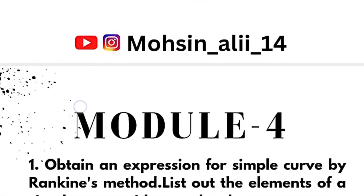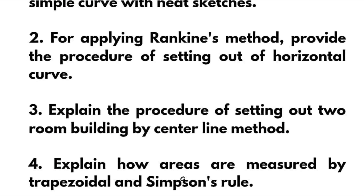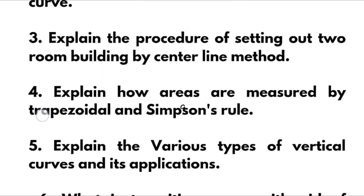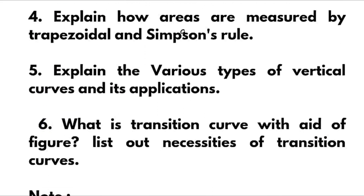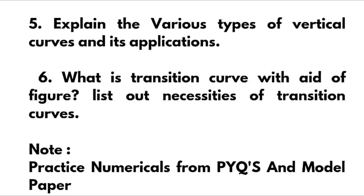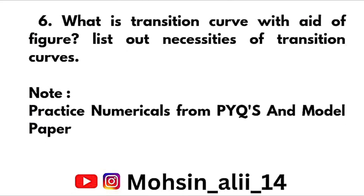Module 4 is also a combination of numerical and theoretical portions. Theoretical portions include: Obtain an expression for simple curve by Rankine's method. List out the elements of a simple curve with neat sketches. Provide the procedure of setting out of horizontal curve applying Rankine's method. Explain the procedure of setting out a two-room building by centre line method. Explain how areas are measured by trapezoidal and Simpson's rule. Explain the various types of vertical curves and their applications. What is a transition curve? List out the necessities of transition curves. For numericals, practice from previous year question papers and model paper.